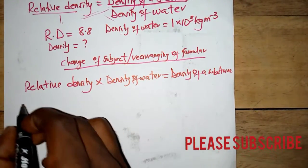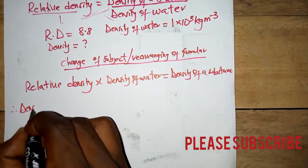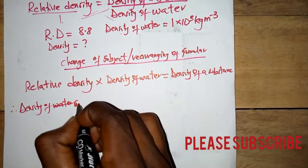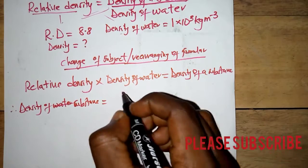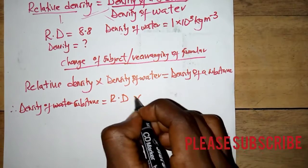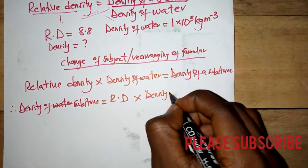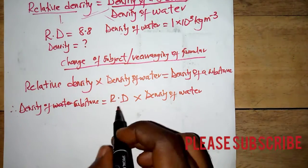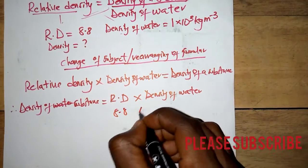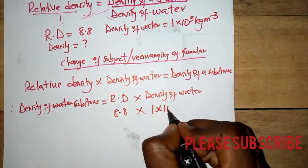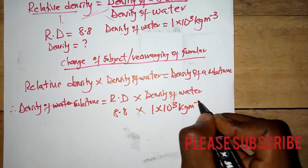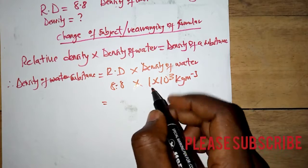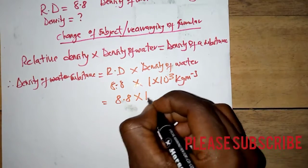So therefore, the density of the substance equals relative density times the density of water. Substituting: relative density is 8.8 multiplied by the density of water, which is 1 times 10 to the power 3 kilograms per meter cube. This gives us 8.8 times 10 to the power 3.